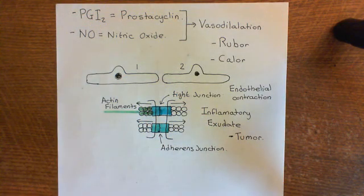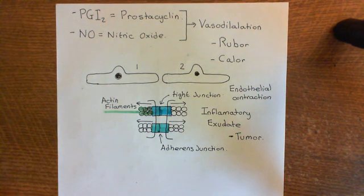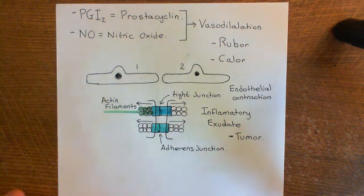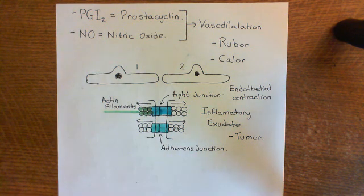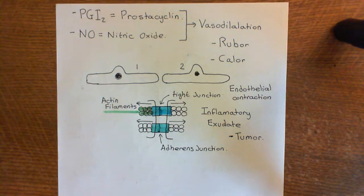So far we've seen rubor, calor, and tumor — three of the five pillars of inflammation. We'll see the other two in a moment. The point of this inflammatory exudate is that it brings in a huge number of proteins from the blood which are going to be useful in attacking the pathogen that has invaded, containing the pathogenic infection, and also leading to a positive feedback loop.